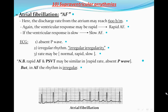In atrial fibrillation, the discharge or firing rate from the atrium may reach up to 600 per minute. The ventricular response may be rapid, producing rapid atrial fibrillation, or slow, producing slow AF. The scientific terms are AF with rapid ventricular response or AF with slow ventricular response. To diagnose AF on the ECG, the P-wave will be absent.